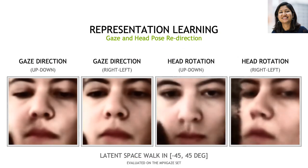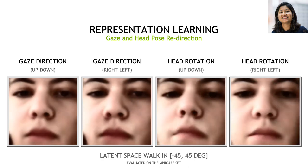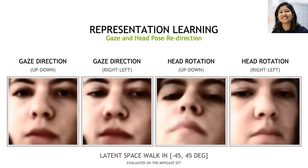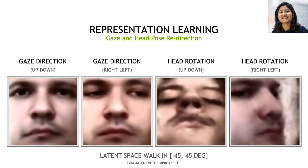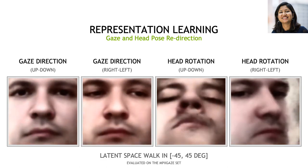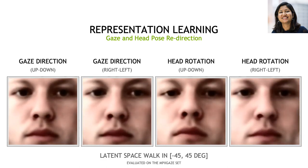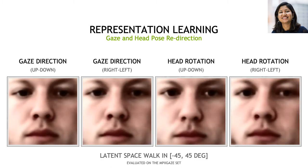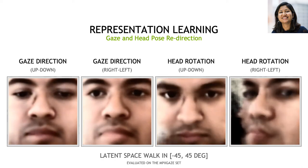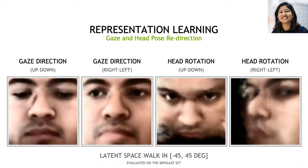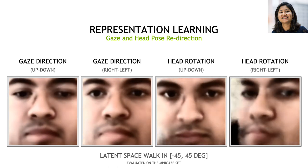Once trained, what DTED is able to do is take an input image along with a target gaze or head pose value, and produce an output image in which the gaze or head pose is redirected to the target values. What you see here from left to right is redirection of the gaze up, down, left, right, and of the head pose up and down, and left and right.